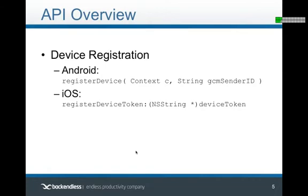From the device registration perspective, I have an example here for Android and iOS — it's really just a one-liner to register a device. For Android, you identify the device with a GSM sender ID, which is the project ID when you register with Google APIs. For iOS, it's the device token, which is easy to obtain. There is also a Windows Phone registration that is just as simple.